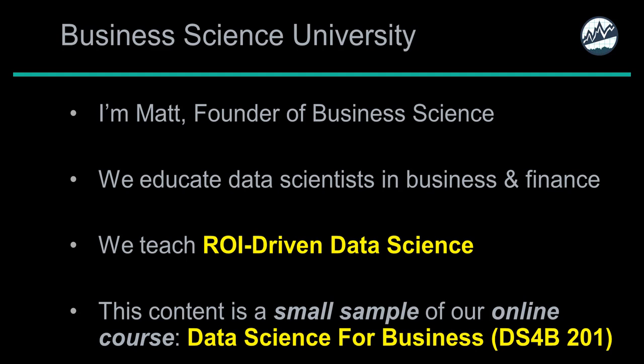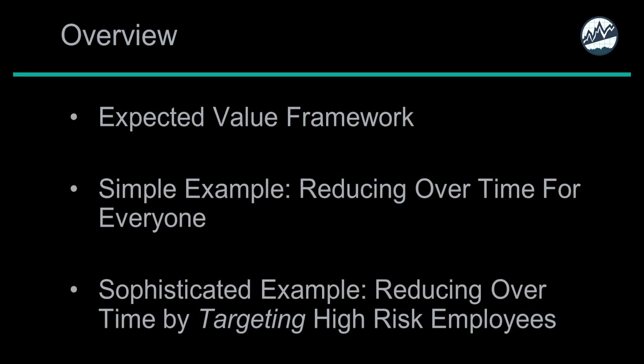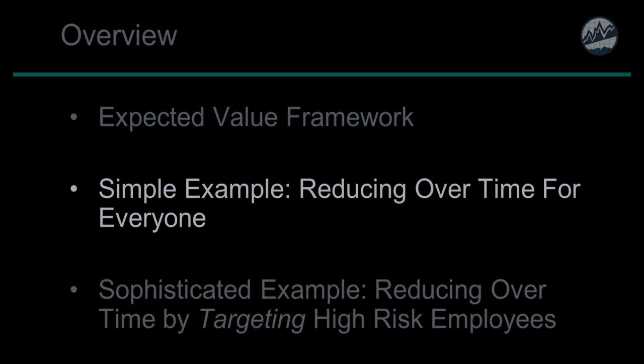This lecture is a small sample from our new online course, Data Science for Business DS4B 201. In this lecture, we'll explain what expected value is and why we need the expected value framework to help solve employee churn. We'll go over a simple example showing how it can be used to reduce the expected employee attrition costs by lowering overtime for employees.